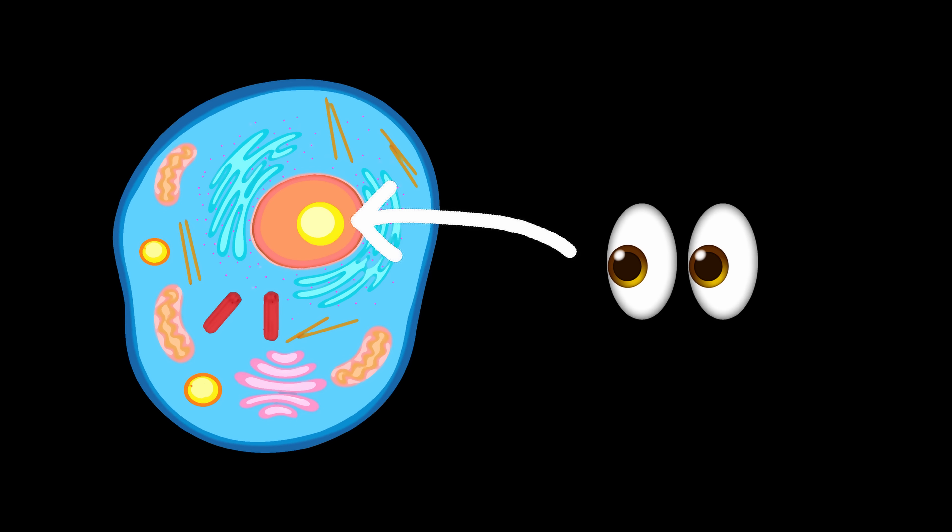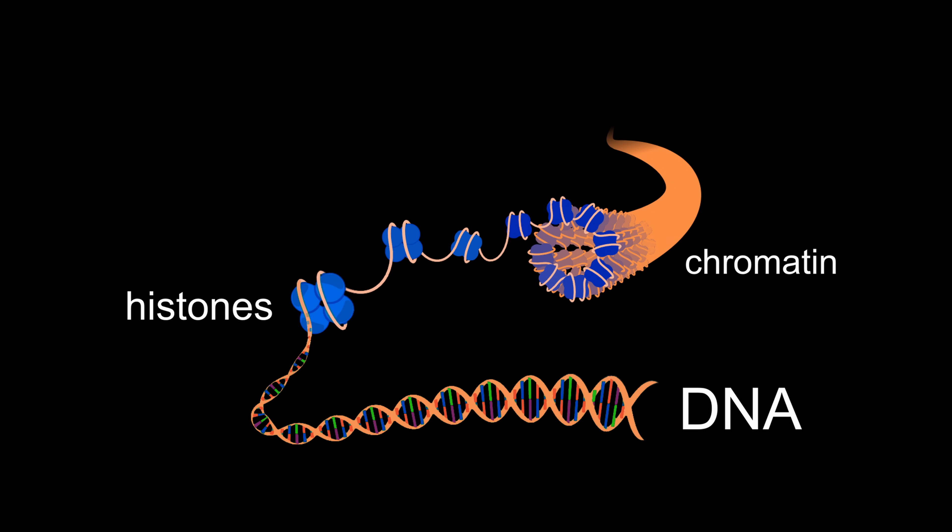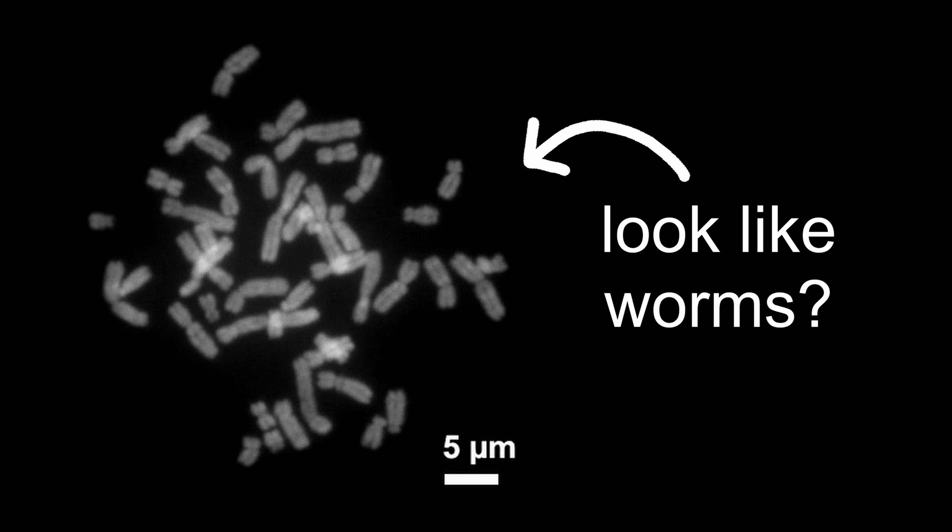Well, if you were to look inside the nucleus, you wouldn't find the DNA just floating around like this, or even this. No, you would actually find lots of these worm-looking things. To be exact, DNA is coiled up around proteins called histones, which are then condensed into strands of chromatin, which are then coiled up even more to make tightly packed units of DNA called chromosomes, which kind of look like worms.